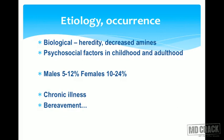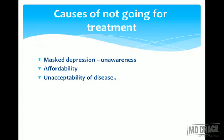The etiology of major depressive disorder involves biological factors including heredity and decreased levels of amines in the brain, plus psychosocial factors in childhood and adulthood. It is more common in females at 10–24% and in males at 5–12%, and is often associated with chronic illness and bereavement. Patients usually don't seek treatment early due to masked depression, unaffordability of drugs, or unacceptability of the disease.